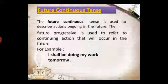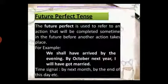Future perfect tense is used to denote an action that will be completed by a particular time in the future, especially before another action takes place. For example: 'We shall have arrived by the evening' and 'By October next year, I will have got married.'